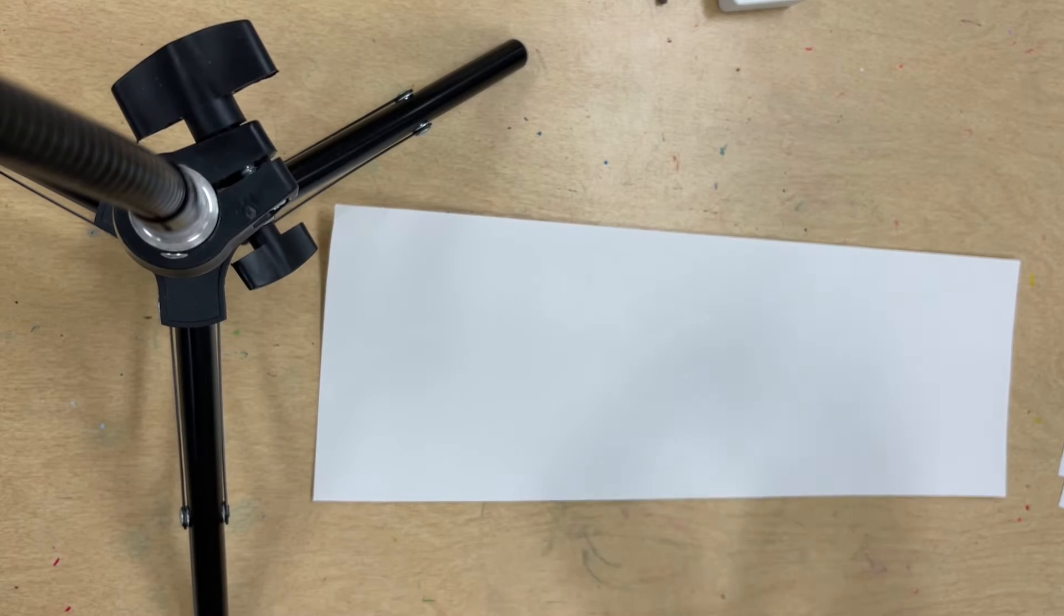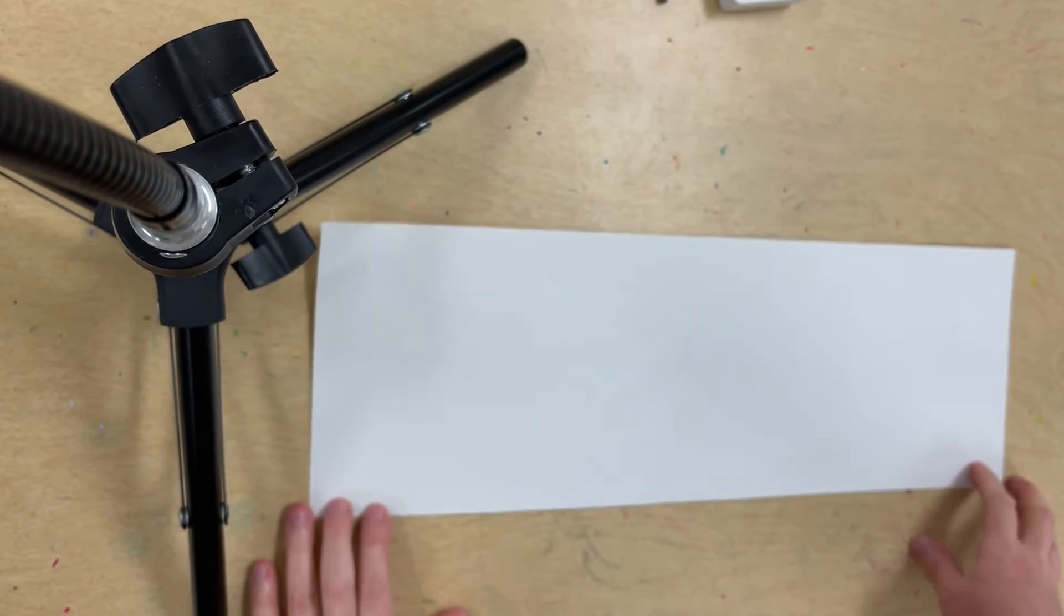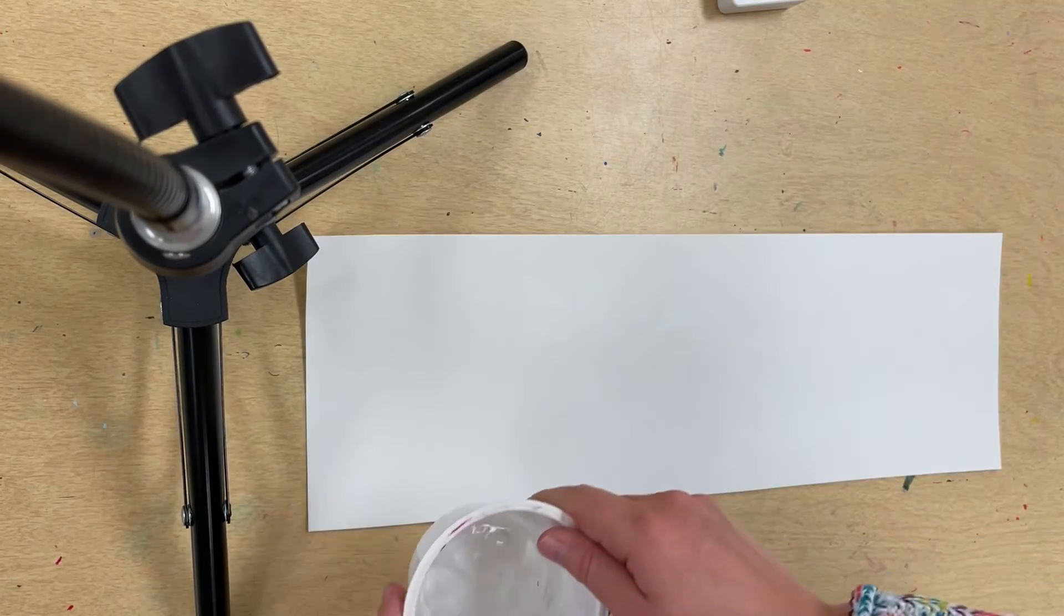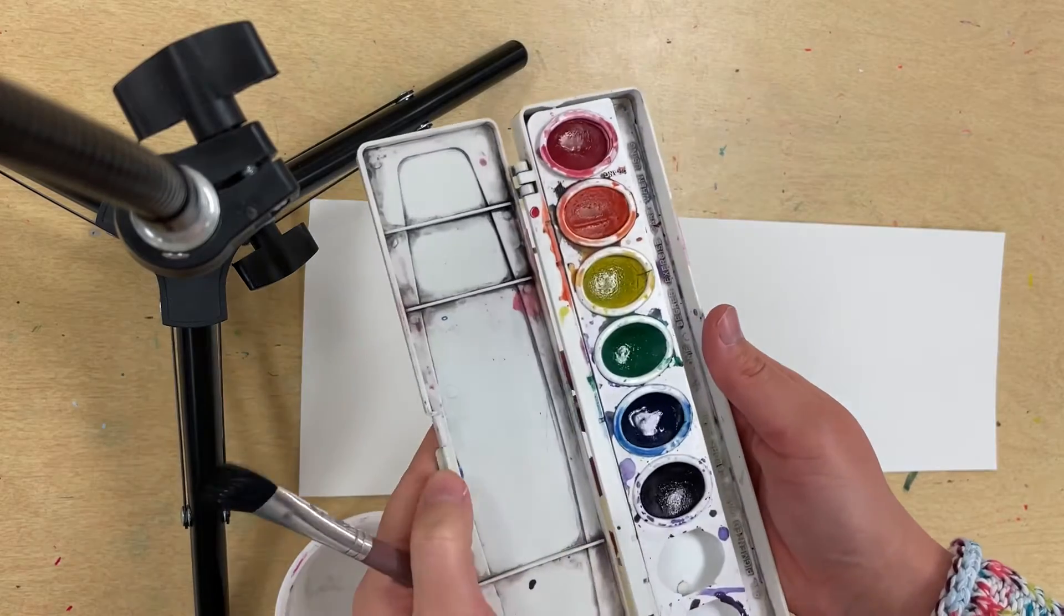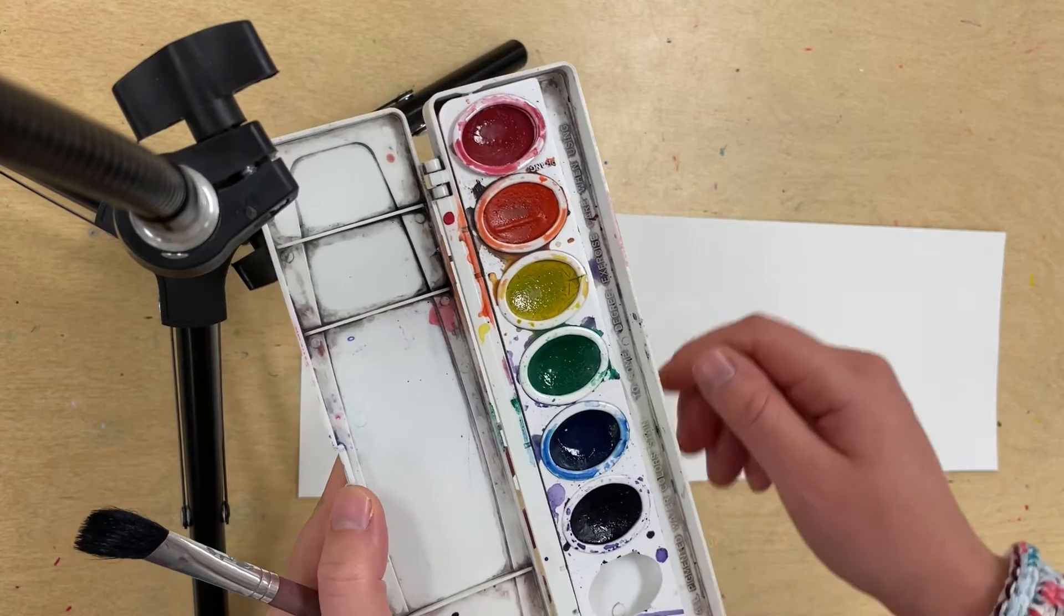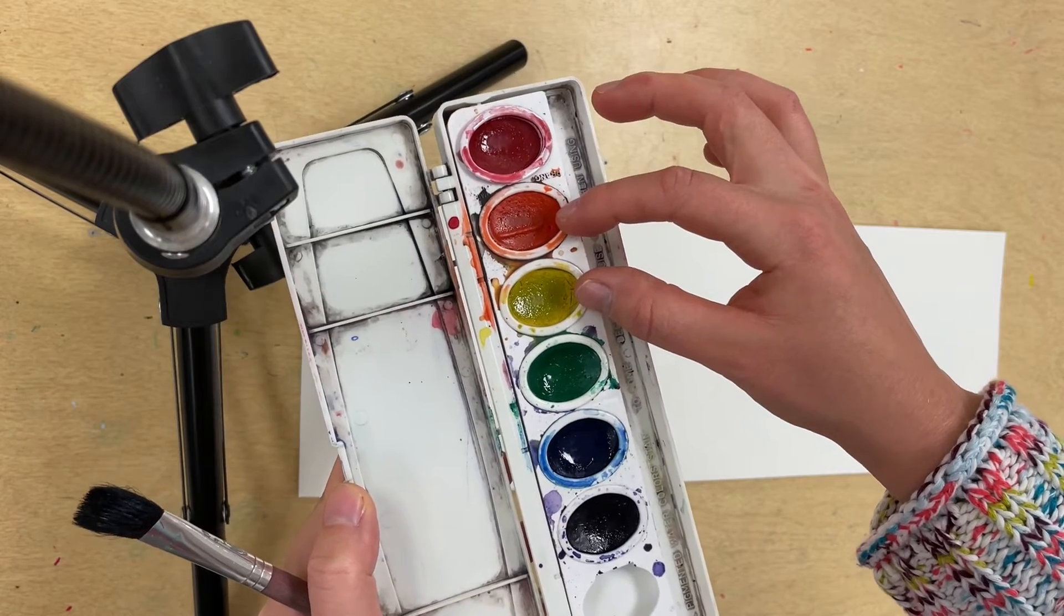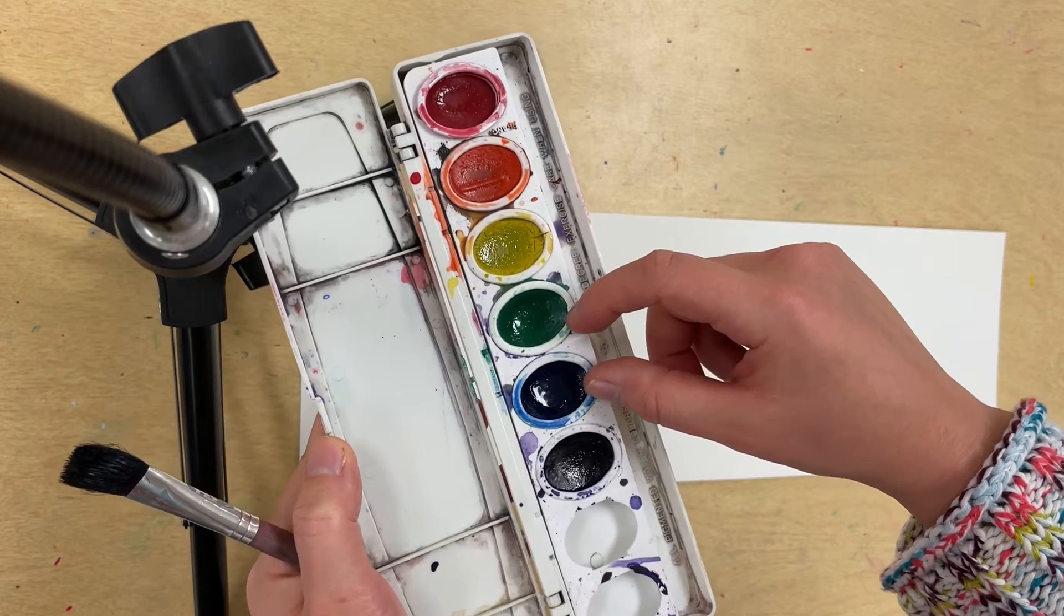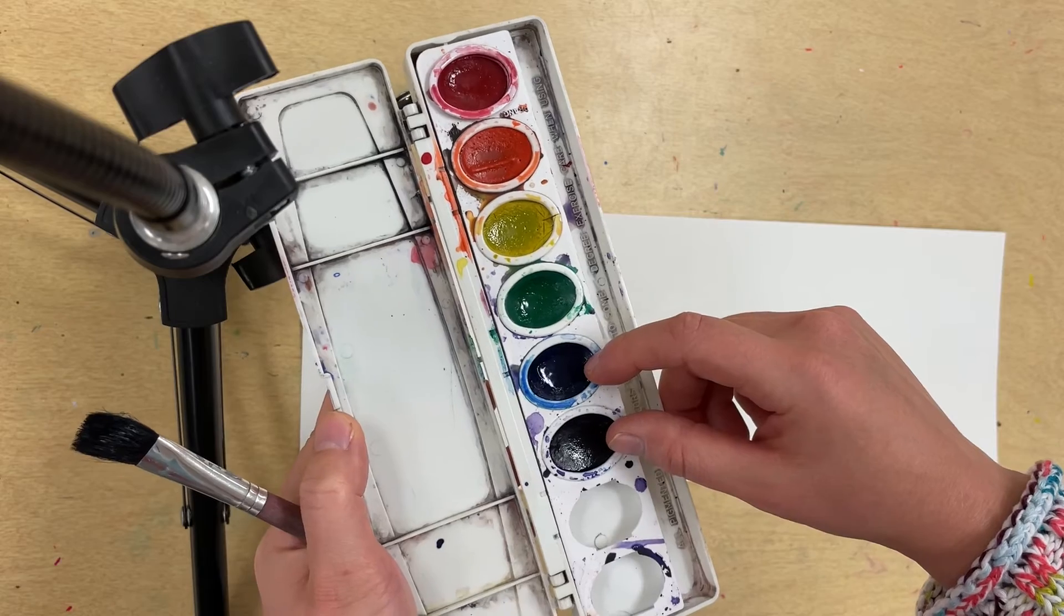Now it's time to do a watercolor wash over my paper so that my white crayon cranes show up. I'm going to take my watercolor stuff: a cup of water, a paint brush, and my watercolor paints. I'm going to choose two analogous colors to paint over my paper. Analogous colors are right next to each other. You can use red and orange, orange and yellow, yellow and green, green and blue, or blue and purple because they're right next to each other in the tray.